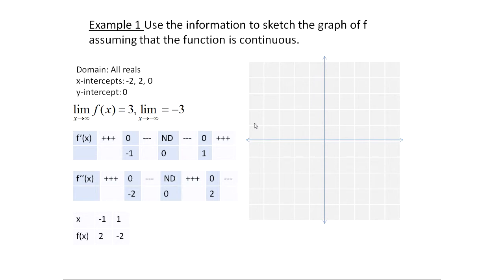And I'm not going to go through how to get all this information because this is stuff that we've gone through in the past few sections. So, right, I have this function f, and I have a description for it, the domain, the x-intercepts, the y-intercepts, a couple limits, I have a sign chart for f prime, a sign chart for f double prime, and I even have a table of values.